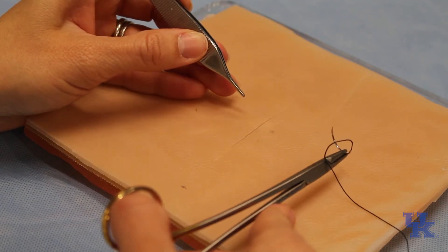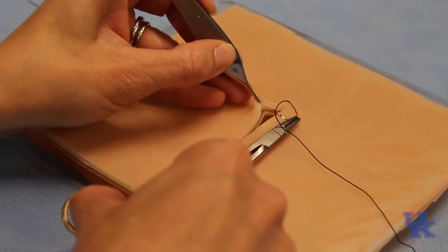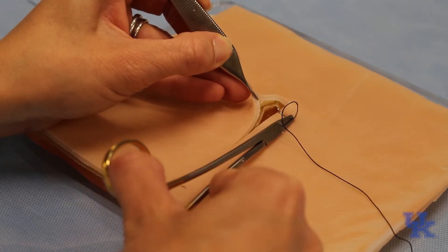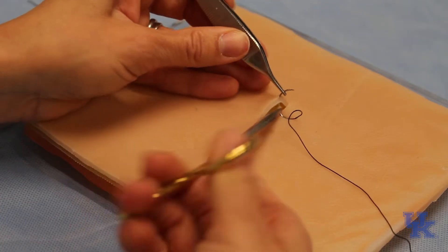I'm going to demonstrate a running subcuticular stitch. There's different ways to throw the knots, but I like to start with a buried knot close to the skin edge, which is where you start deep. You come out right below the epidermis.